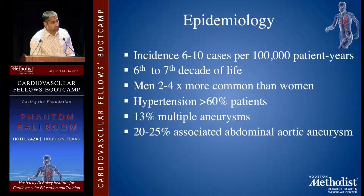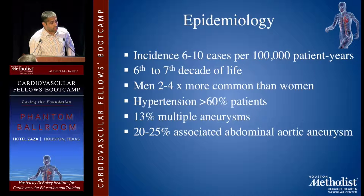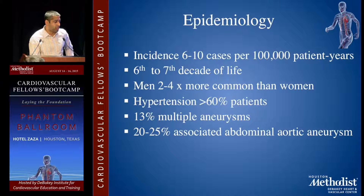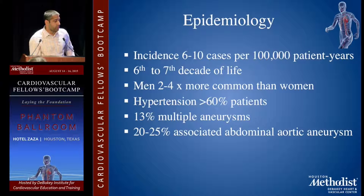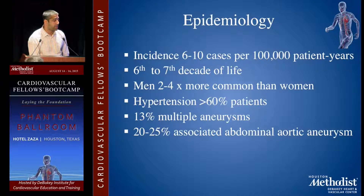The incidence is six to ten cases per hundred thousand. It is most commonly seen in the sixth to seventh decades of life and is two to four times more common in men. Hypertension and smoking are major risk factors. 13% have multiple aneurysms, and 20 to 25% are associated with abdominal aortic aneurysms.